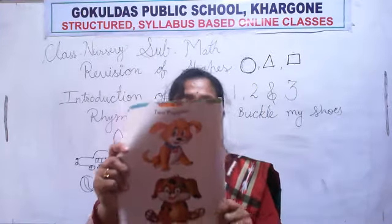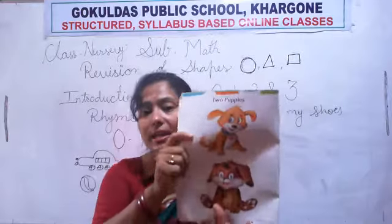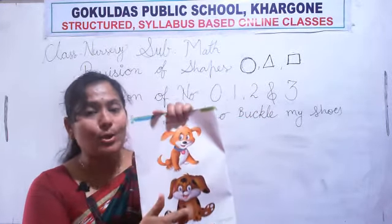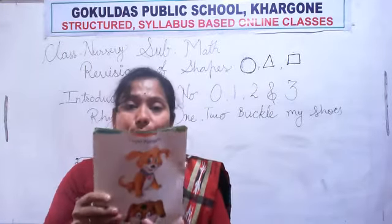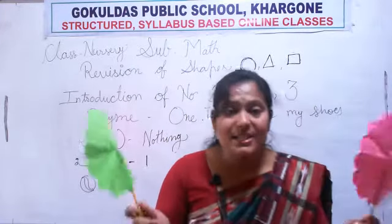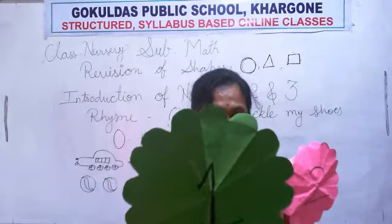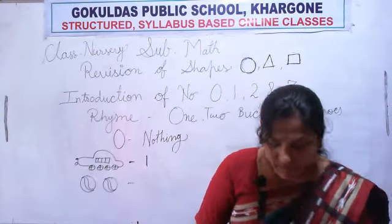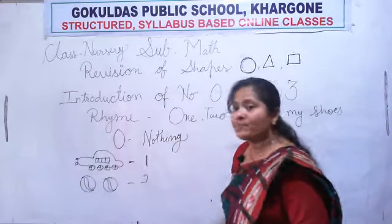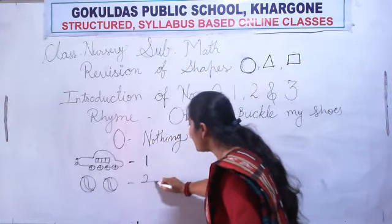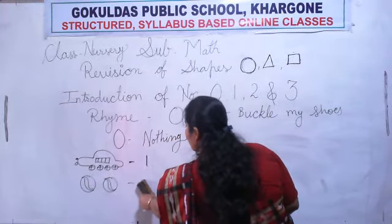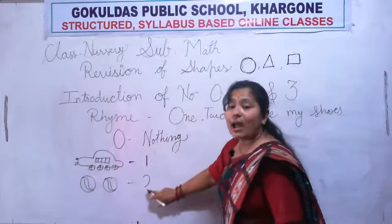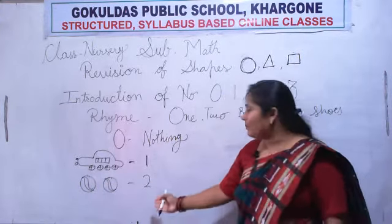Now see here in this book — how many dogs? One, two. How many dogs? One and two. Now what is this? Flowers. How many flowers? One, two. And how to write number 2? Make a half curve and a slipping line. Half curve and slipping line makes number 2.